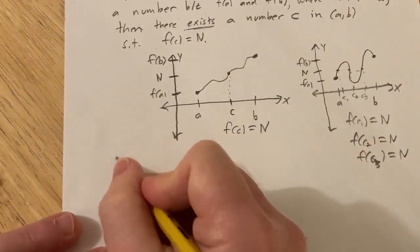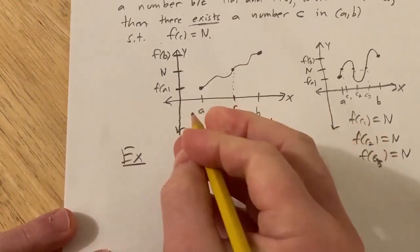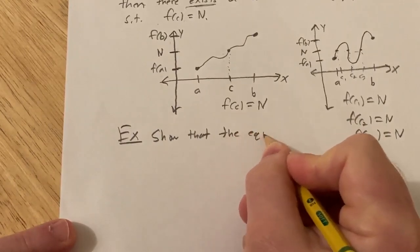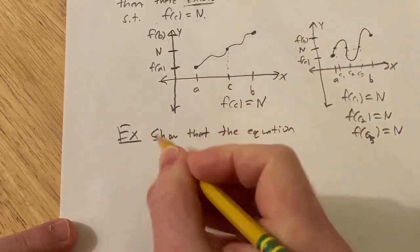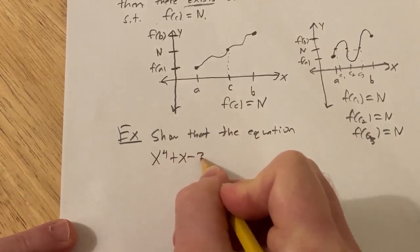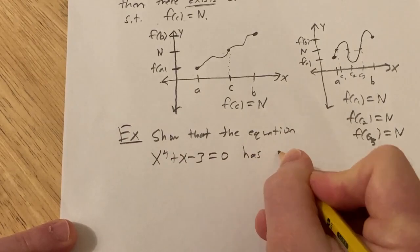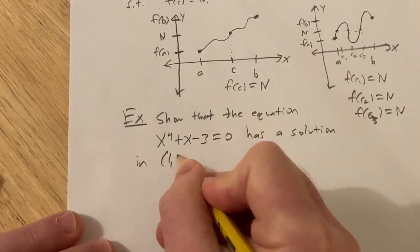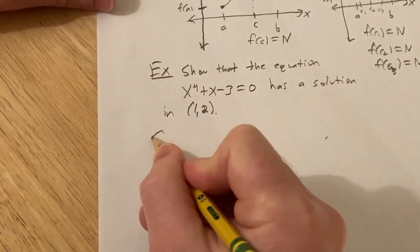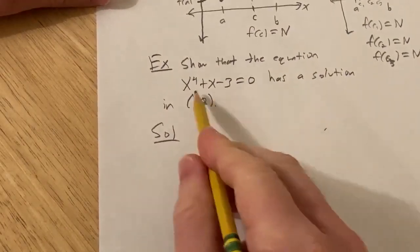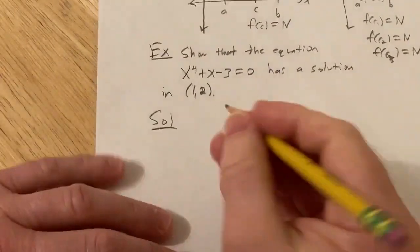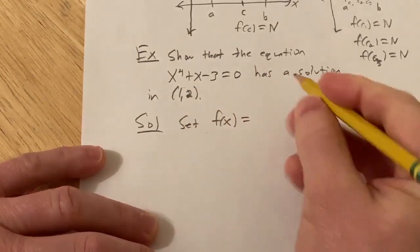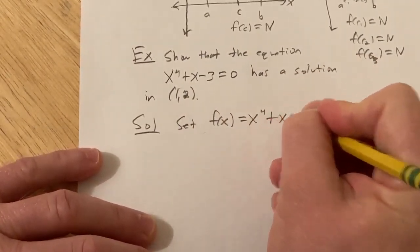Let's do an example. We're going to show that the equation x⁴ + x − 3 = 0 has a solution in the interval [1, 2]. To do this formally, we set f(x) equal to the left-hand side of the equation, so f(x) = x⁴ + x − 3.